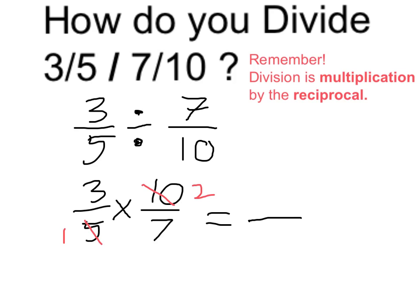So this will equal three times two, which is six, over one times seven, which of course is seven.